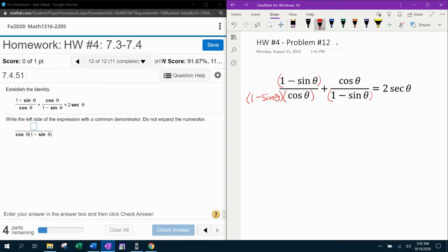Remember, whatever you give to the bottom, you have to give to the top. So I'm going to have to give the numerator a one minus sine theta also. For the other fraction, the one minus sine theta needs the cosine theta. So now they both have cosine theta one minus sine theta. Cosine theta one minus sine theta. Now the denominators are the same.